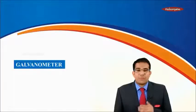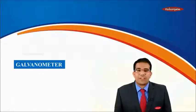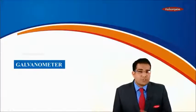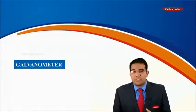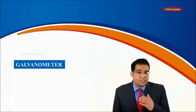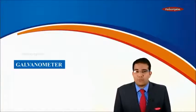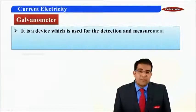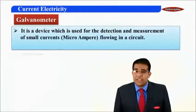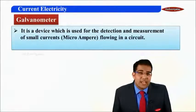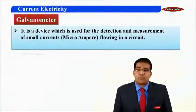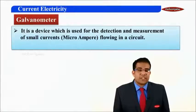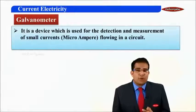Hello students, welcome to the chapter of current electricity. From this module onwards we will discuss some instruments, and our first instrument is the galvanometer. It is a device which is used for the detection and measurement of small currents, like microampere, flowing in a circuit.